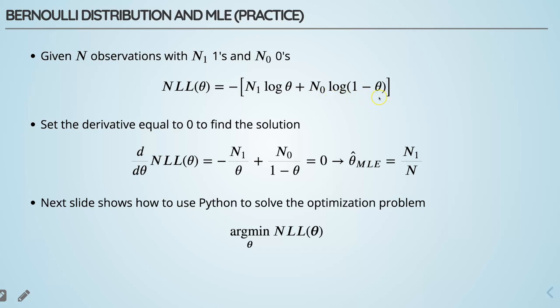Since this is a function of only one variable, we can minimize the negative log-likelihood by finding the derivative and setting it to zero. The derivative of log(theta) with respect to theta is 1/theta, so we get negative n_1/theta plus n_0/(1 - theta) equals zero. Solving this equation gives us the maximum likelihood estimate of theta, which is n_1/N — the total number of ones divided by the total number of samples. This is the underlying probability of observing one in the Bernoulli distribution.